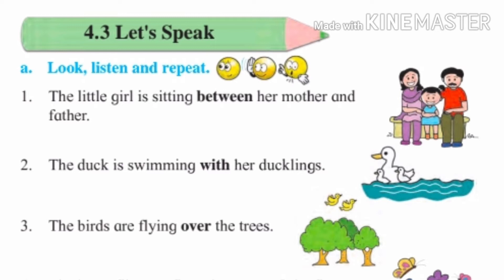Ek choti mulgi apli aai ani vadil ya doghaancha madde basli aai. Between means doghaancha madde. Little girl means choti mulgi, sitting means basli aai. Mother means aai, father means vadil.